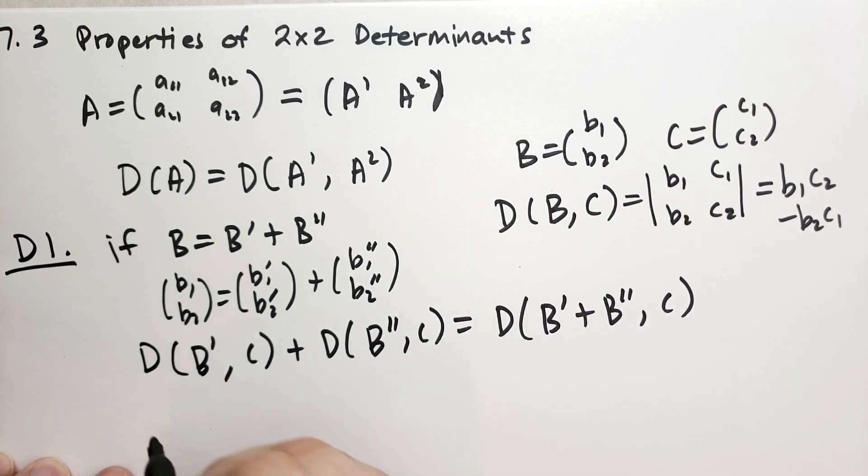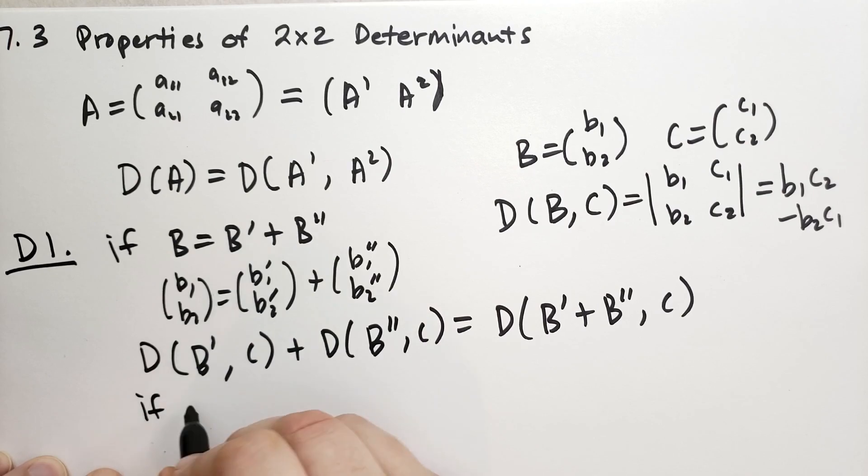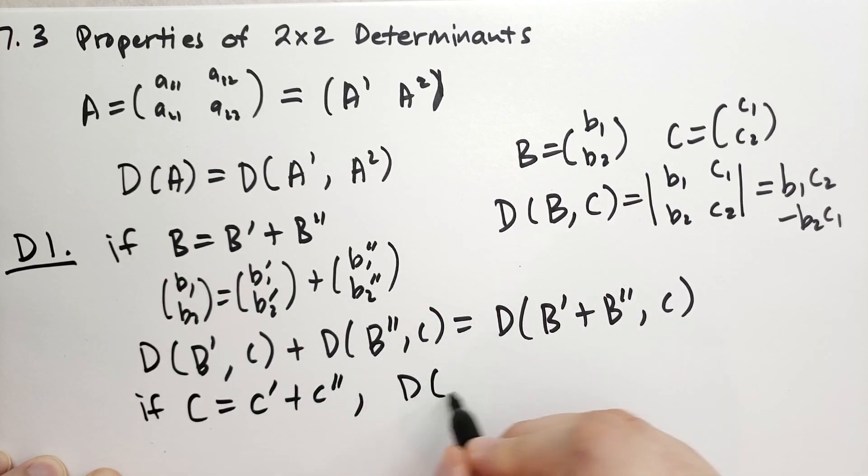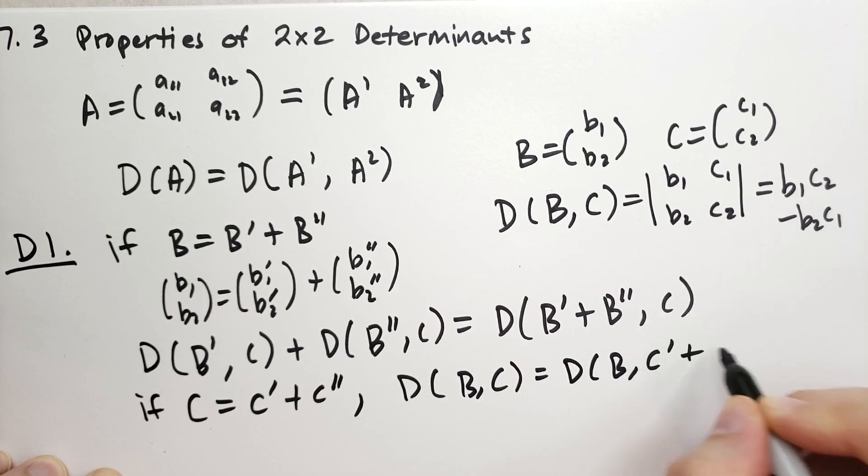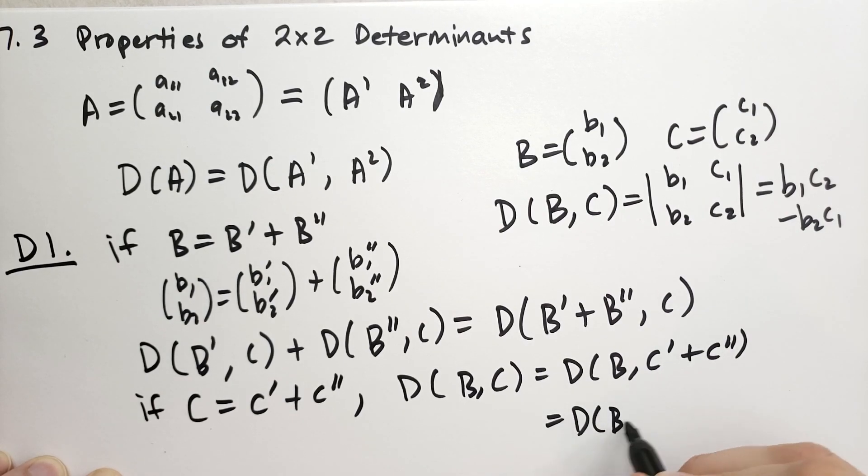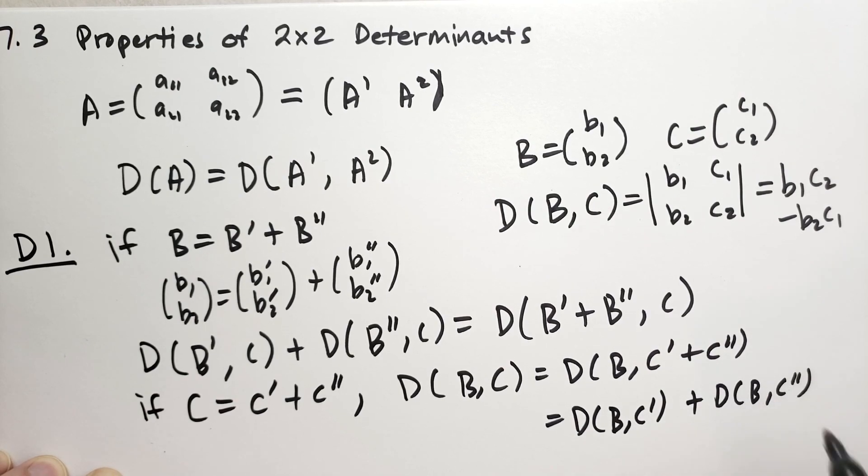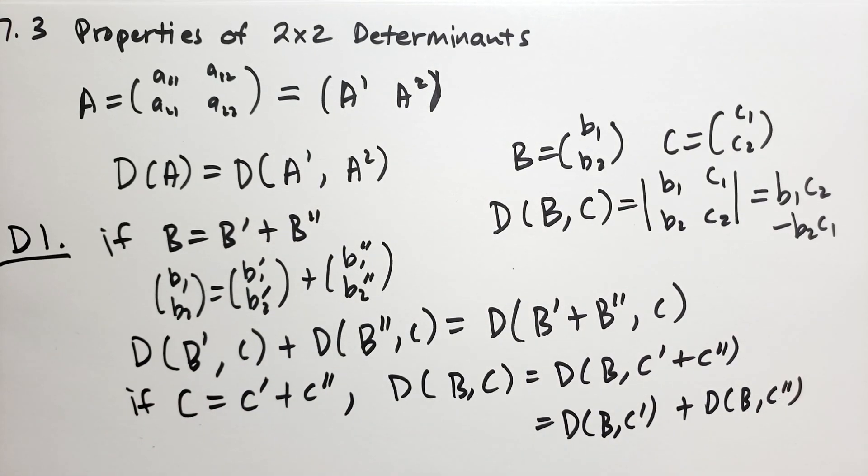What properties does this multiplication satisfy? So we're going to write down some properties here. D1, the property D1 says if B is equal to B' plus B'', so the column vector is actually the sum of two vectors, so we're going to say basically B1, B2 is equal to B1' B2' plus B1'' B2''.